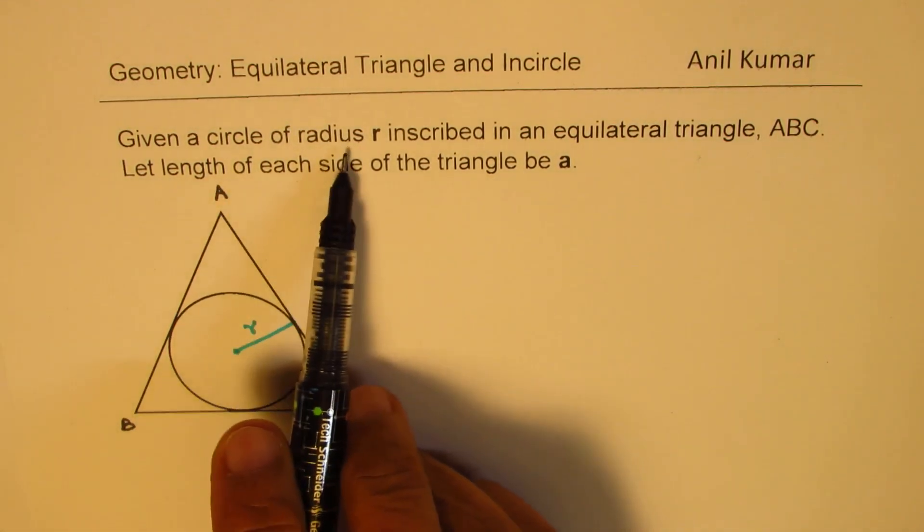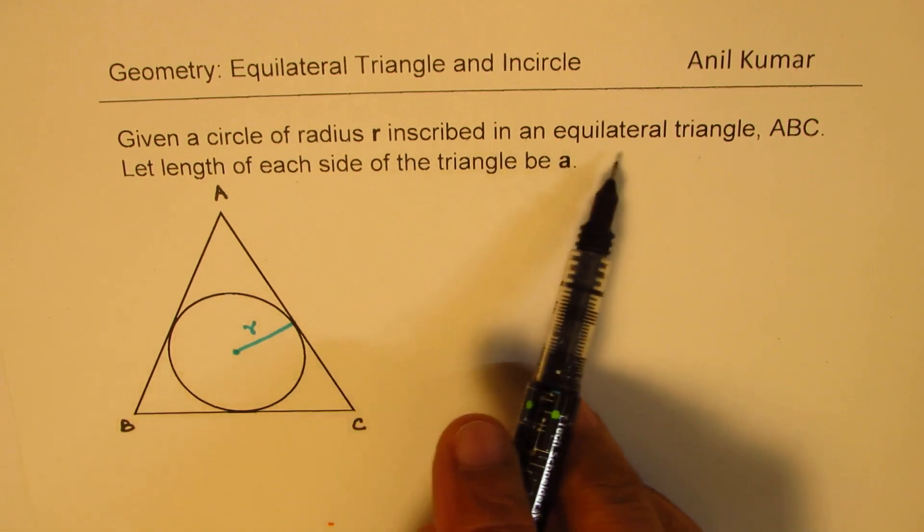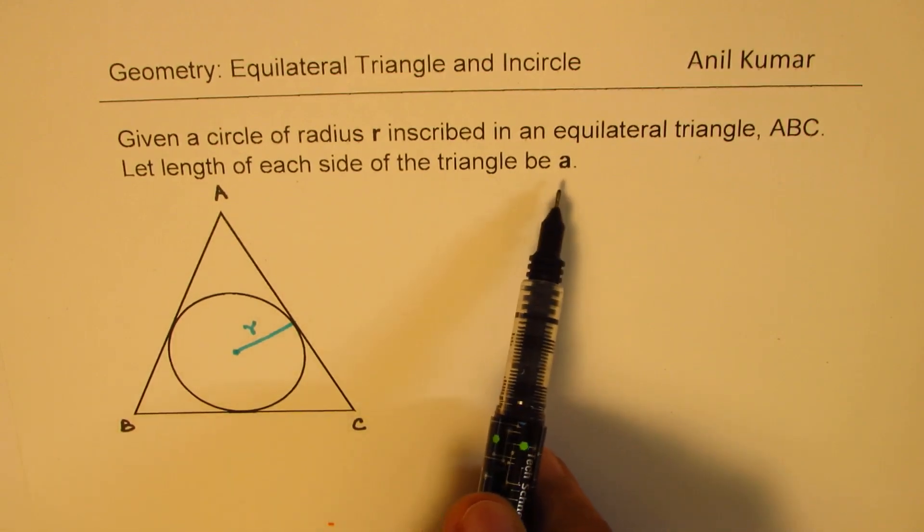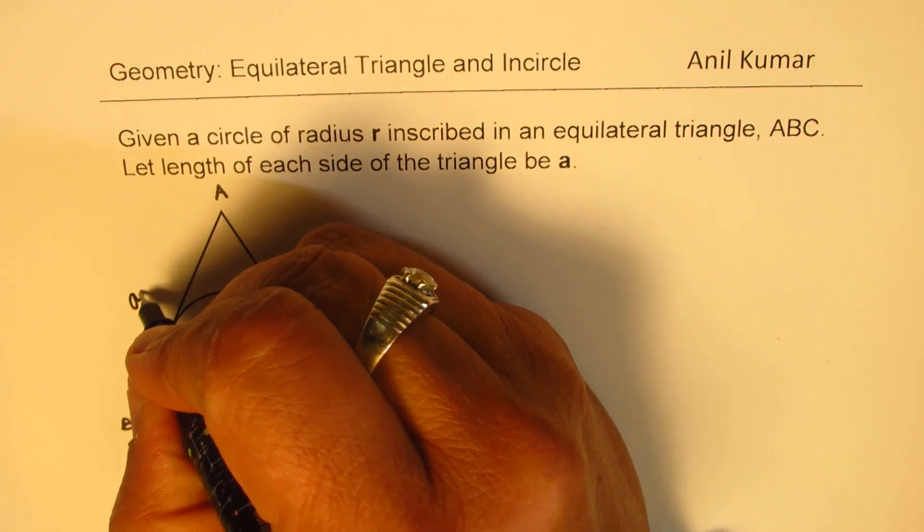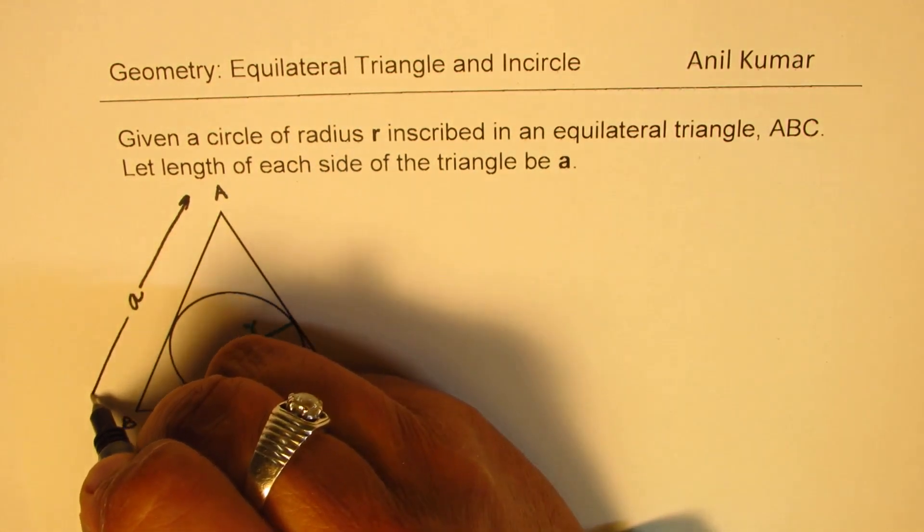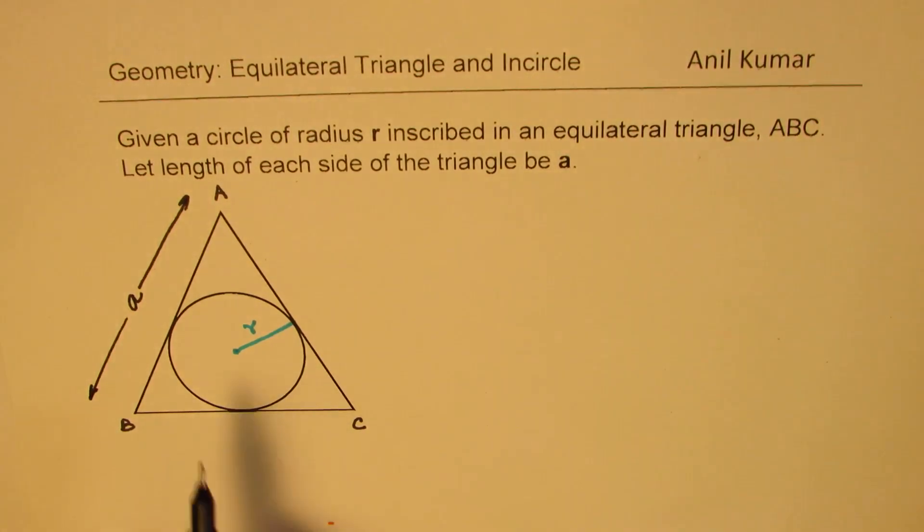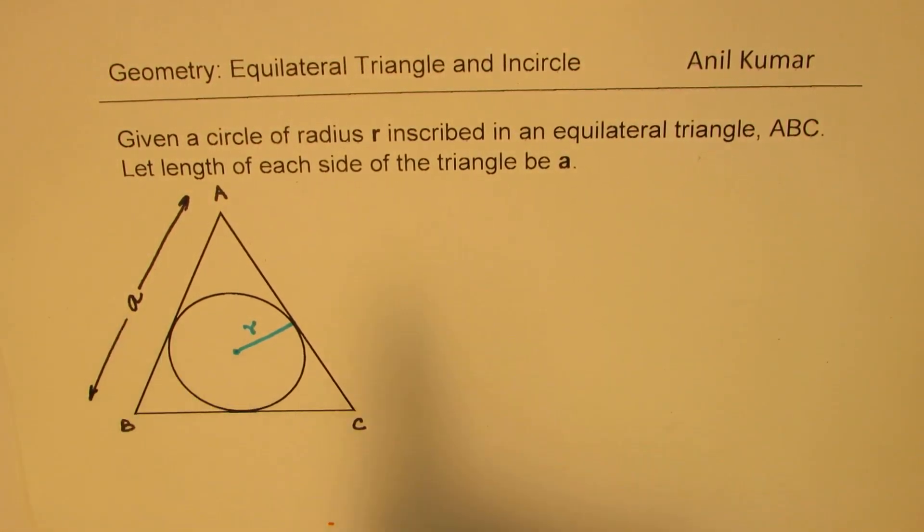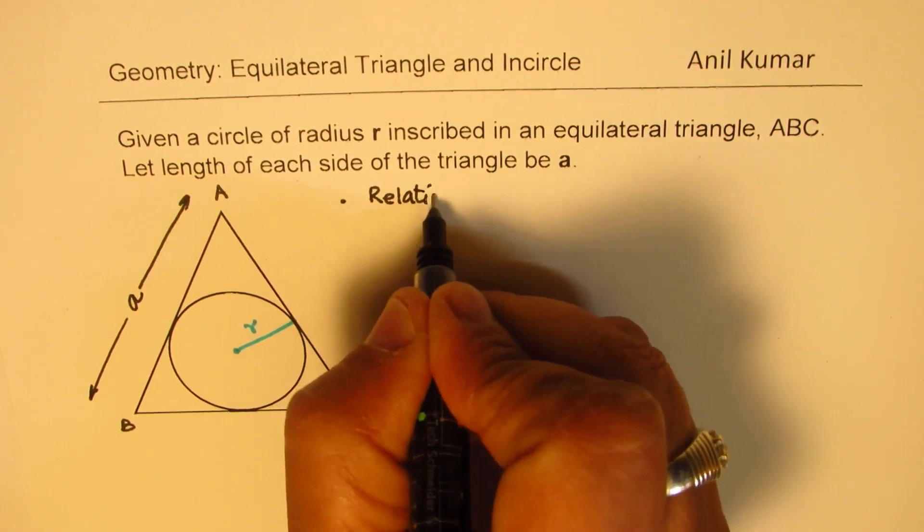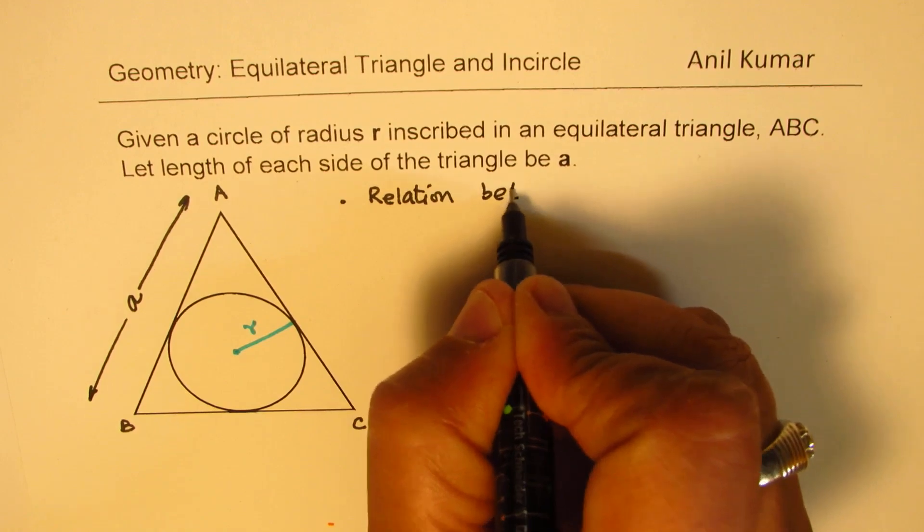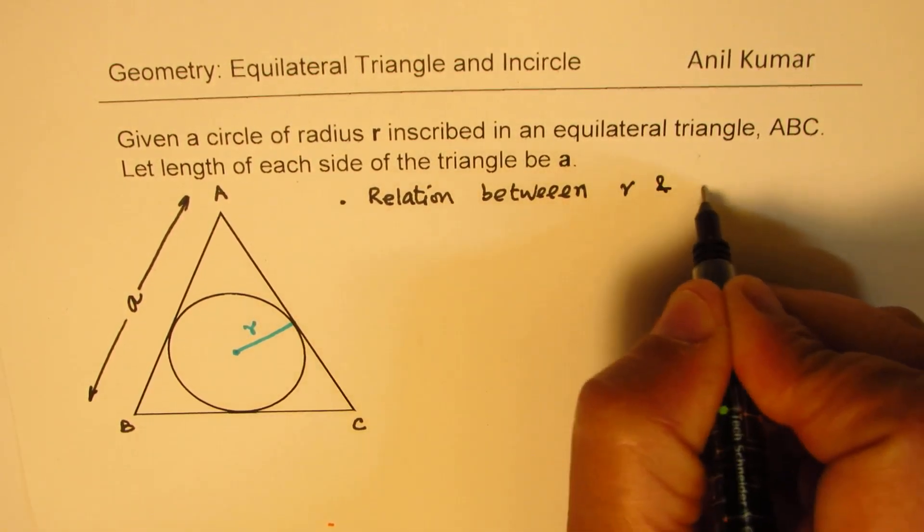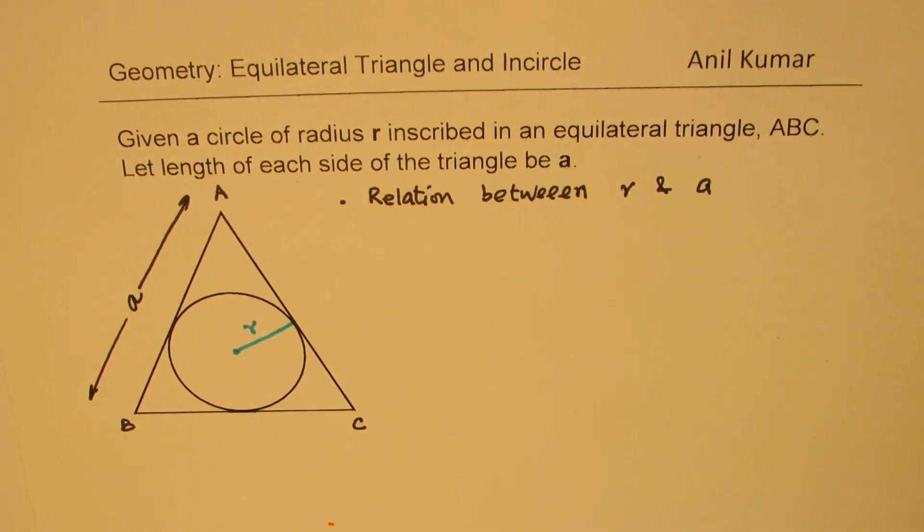We'll discuss equilateral triangle and its relation with the radius of inscribed circle. Here we are given a circle with radius r inscribed in equilateral triangle ABC. Let the length of each side of this triangle be a units. So that is the length of each side. Now let's find a relation between r and a. So we need to first find a relation between r and a. So that's the problem.